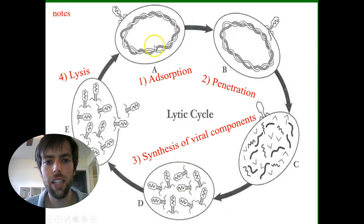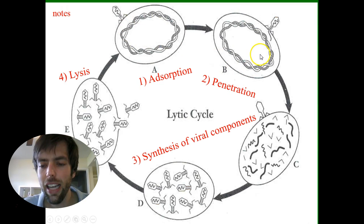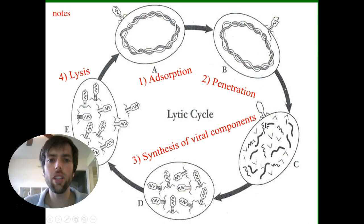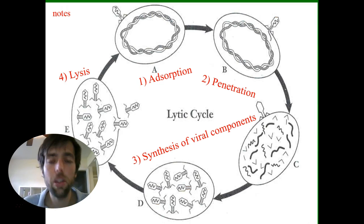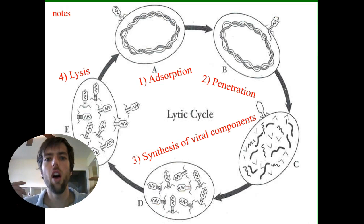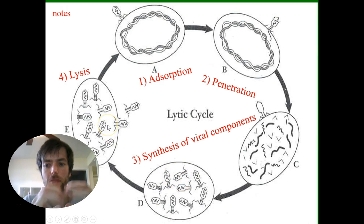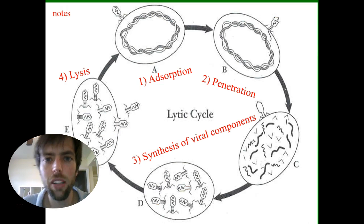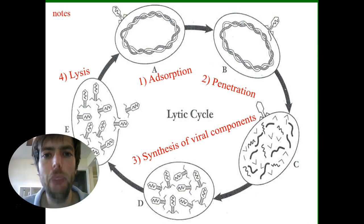When a virus invades our cell, it sticks its DNA inside, and then its DNA mixes with the cell's DNA. The cell is tricked into making viral parts — all those organelles we learned about, the ribosomes, the smooth and rough ER, the mitochondria — all start working for the virus, making little baby viruses. The cell gets bigger and bigger, then pops, releasing all these baby viruses that swarm everywhere and you get sicker.